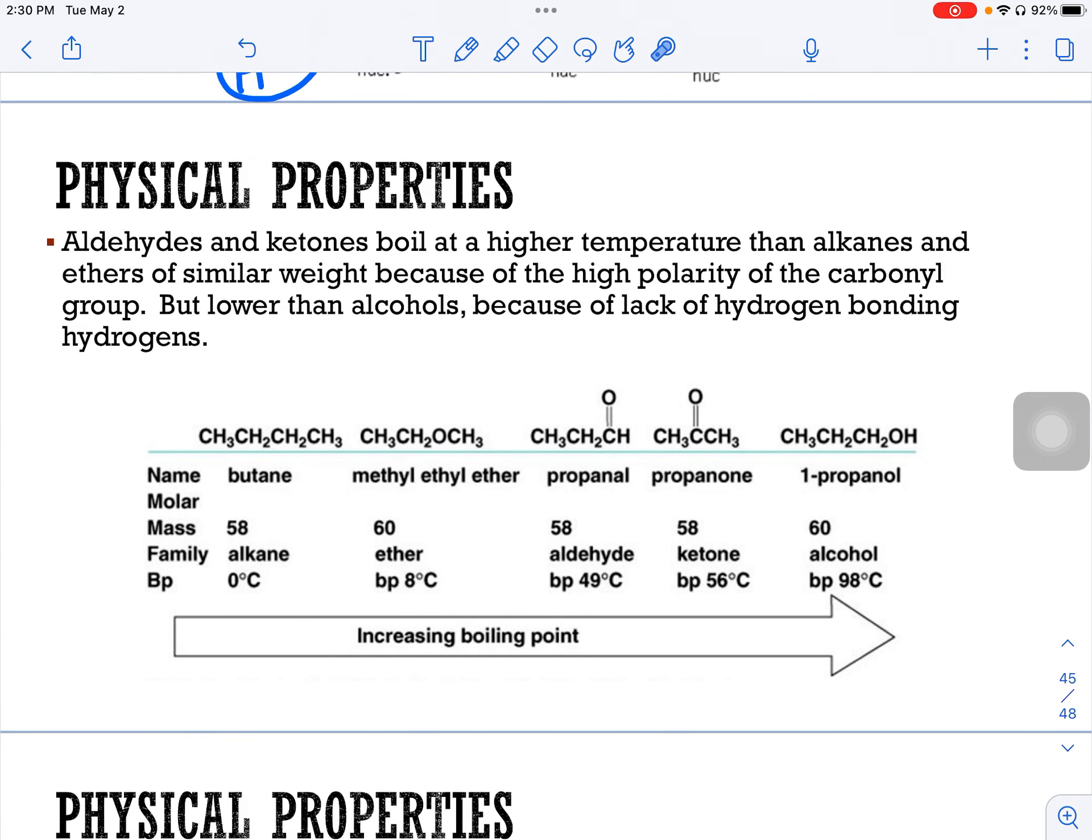Physical properties of aldehydes and ketones are based on that polarity of the C to O bond. They're going to boil at higher temperatures than the alkanes and ethers of similar weight because they have polarity in that carbonyl group. But they're not as high as the alcohols because they do not have hydrogen bonding. So if you look down here, there's the aldehyde and there's the ketone. And you can see that their boiling points are very similar to each other, 49 and 56.